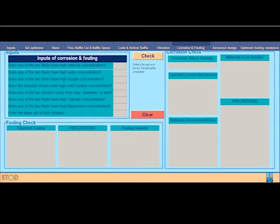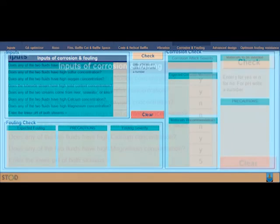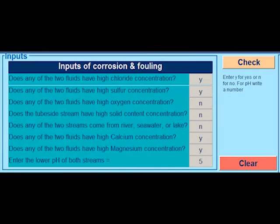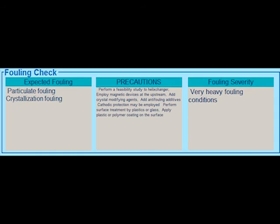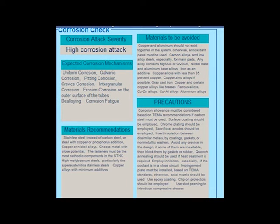In this panel, the corrosion and fouling check is performed. The designer should enter some known data about the two streams. The output of this panel is the corrosion and fouling mechanism, the precautions that should be taken, the material that should be used, and the material that should not be used.